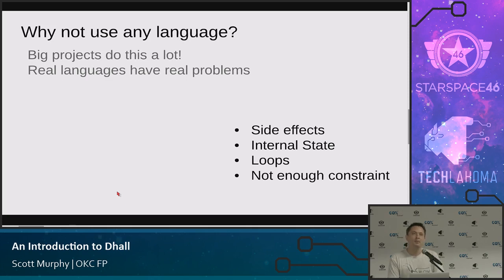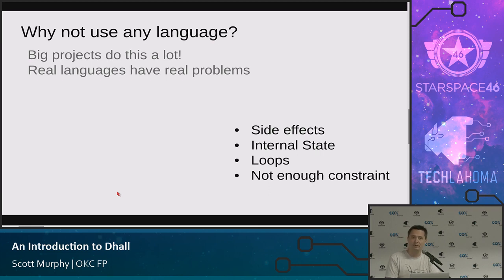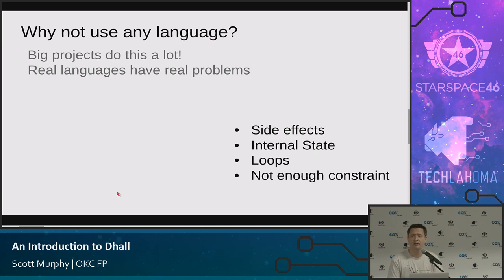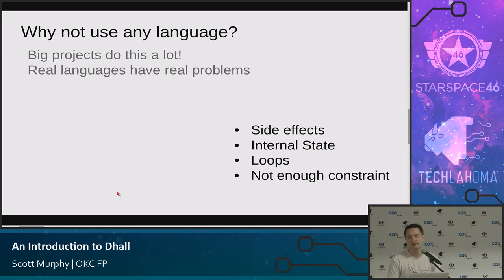One thing that often happens in large projects is people stop using config languages. They stop using things like XML and YAML and they'll just write code directly. This is really common with Python programmers and JavaScript programmers — people that already have a scripted language — so you'll see them just write a Python script or write a bash script. My biggest complaint about doing something like that is it's easy to write a mistake. And sometimes those languages give you too many features, so it can be hard to tell what's going on. Pretty soon you need a config language for your config language.